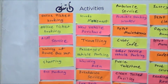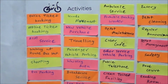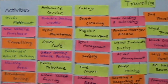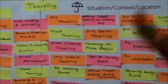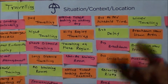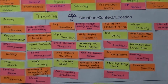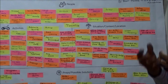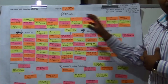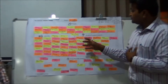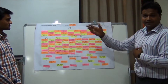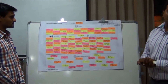Next is situation, context, and location — which type of problems we are facing and which type of situations we are in. This will be explained in the second canvas by my colleague.